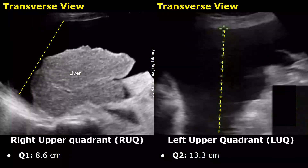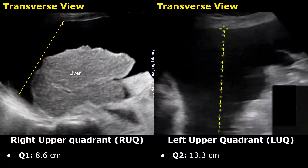Now we will look at some examples of Ascites index calculation. The image on the left shows a shrunken liver with irregular margins, surrounded by anechoic fluid. This image is in the transverse plane. The maximum depth measured in the right upper quadrant, Q1, is equal to 8.6 centimeters. The image on the right is of the left upper quadrant in the transverse plane, also filled with anechoic fluid. The maximum depth, Q2, here is 13.3 centimeters.